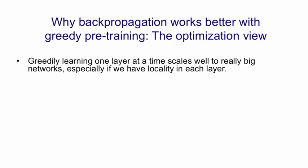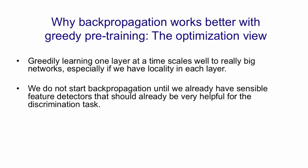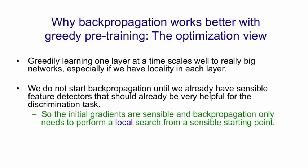The pre-training scales really well if we have big networks, especially if each layer has locality. In vision for example, if we have local receptive fields in each layer then there's not much interaction between widely separate locations, and so it's very easy to learn a big layer more or less in parallel. When we do pre-training we don't start back propagation until we've already learned sensible feature detectors, which should be very helpful for discrimination. So the initial gradients are much more sensible than if we use random weights, and back propagation just needs to do a local search from a sensible starting point.